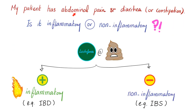A patient has abdominal pain and diarrhea, or abdominal pain and constipation — abdominal pain plus any abnormal bowel movement. Is this condition inflammatory or non-inflammatory? Order the lactoferrin level in the stool. If positive, that's an inflammatory condition — for example, inflammatory bowel disease (IBD). If no lactoferrin is found, it's a non-inflammatory condition such as IBS, irritable bowel syndrome. IBD is inflammatory; IBS is non-inflammatory.